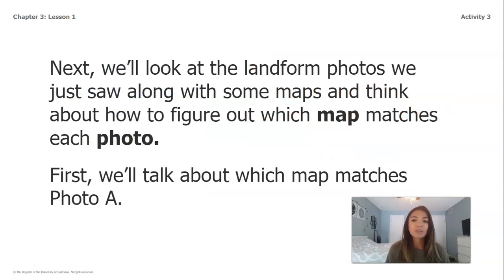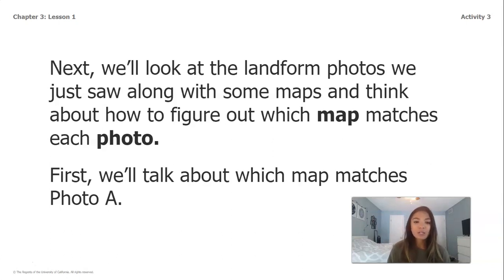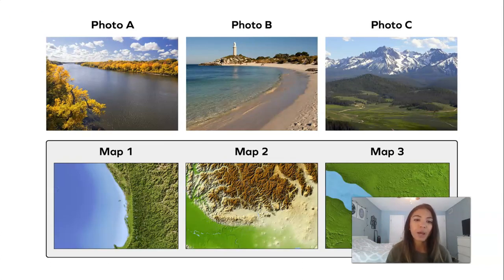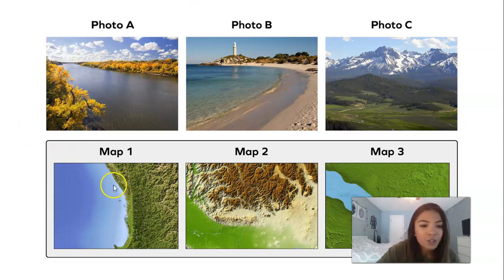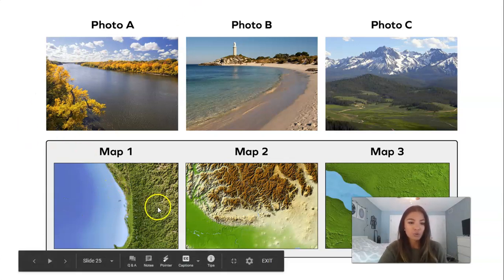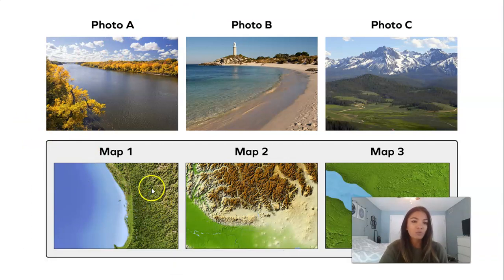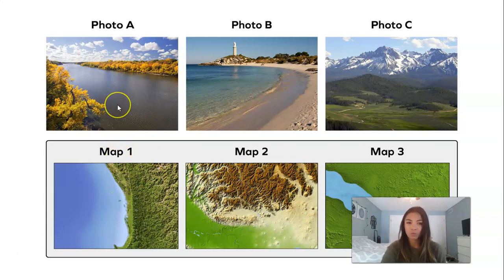So next we're going to look at the landform photos we just saw along with some of the maps and think about how to figure out which map matches each photo. First we're going to talk about which map matches photo A. So photo A we see in the left corner over here. Remember that I see two areas of lowland and there's water running through the middle. When I look at map one, I do see water and lowland, but remember that in photo A there's lowland on both sides. So I know that map one cannot go with photo A.